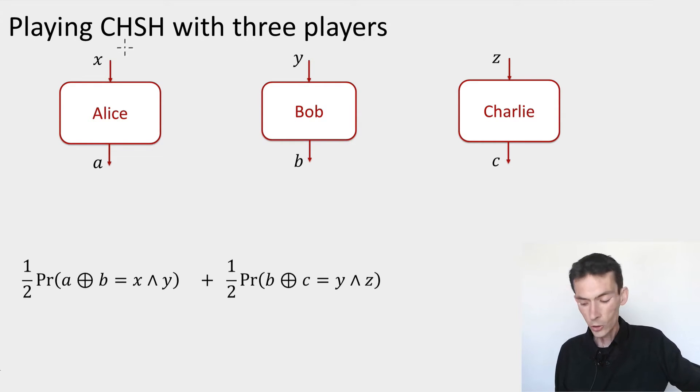So Alice and Bob each get an input, x which is in {0, 1}, and y which is in {0, 1}. They have to produce outputs, a in {0, 1}, b in {0, 1}, such that a plus b is equal to the and of x and y.